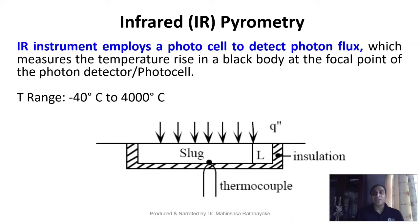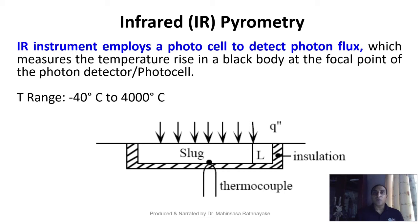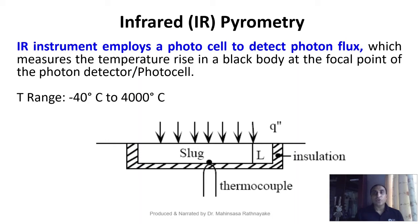The third type is the infrared pyrometer, which is widely used today as a mobile thermometer. It employs a photo cell to detect photon flux from the incoming radiation rather than using traditional lenses, and measures the temperature of the source based on that flux. Sometimes lenses are added to focus the radiation. The temperature range of IR pyrometers is also quite large: minus 40 to 4000 degrees Celsius.